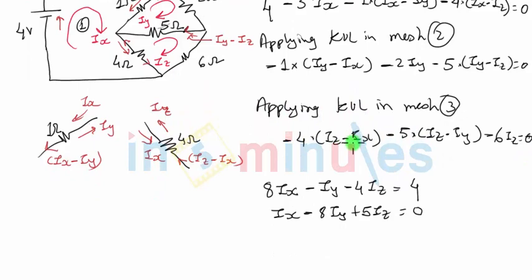And the third equation will be single IX term, plus 4IX. Then you can see for IY also there's only single term, plus 5IY. And for IZ, we have four plus five, nine, plus six, 15. But with a minus sign, so minus 15IZ equals zero.